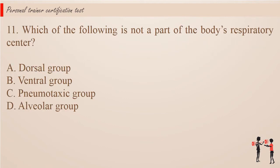Question 11. Which of the following is not a part of the body's respiratory center? a. Dorsal group. b. Ventral group. c. Pneumotaxic group. d. Alveolar group.